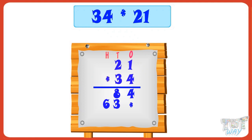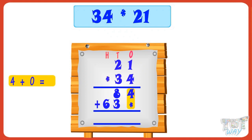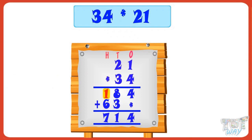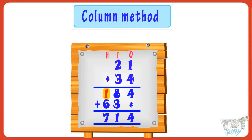Now we have multiplied 21 with both the digits of 34. Now add the products. 4 plus 0 equals 4. 8 plus 3 equals 11 — write 1, carry over 1 to next place. 6 plus 1 carry equals 7. 714 is our product of 21 and 34. This is called the column method of multiplication.